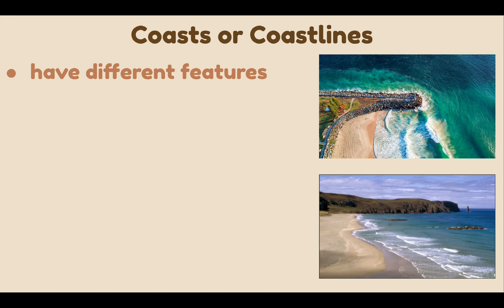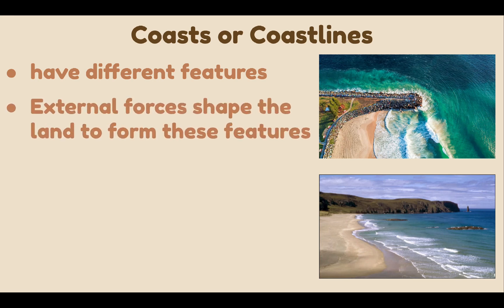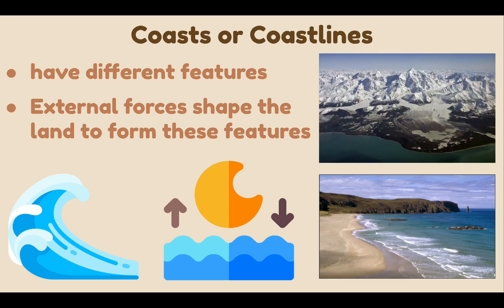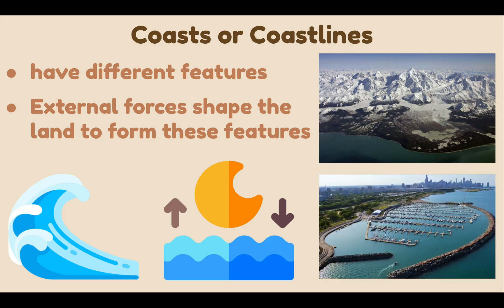External forces such as tides, waves, and water currents shape the land to form these coastal features. Some coasts are also changed by the flow of glaciers, which are huge rivers of ice, and lava from volcanoes. Humans have also built coastal features such as harbors, coastal defenses, and artificial islands.